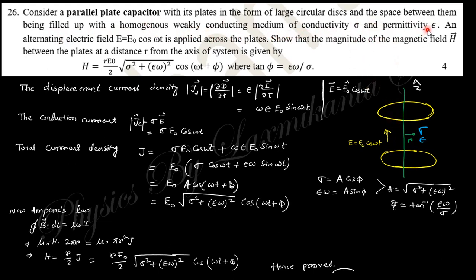Next question: Consider a parallel plate capacitor with its plates in the form of circular disks. The space between them is filled with a homogeneous, weakly conducting medium of conductivity σ and permittivity ε. An alternating electric field E₀ cos(ωt) is applied across the plates.